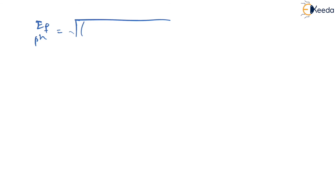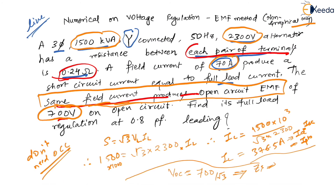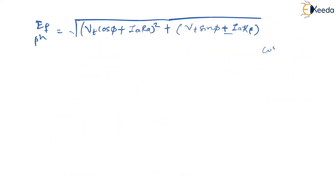Now we apply the EMF formula: EF = √[(VT·cosφ + IA·RA)² + (VT·sinφ ± IA·XS)²]. Here cosφ = 0.8, and sinφ = sin(cos⁻¹(0.8)) = sin(36.86°) = 0.6. The terminal voltage VT (phase) = 2300 / √3 = 1327.9 volts.